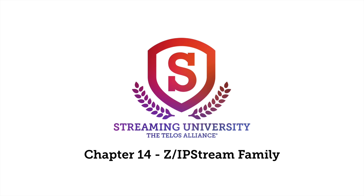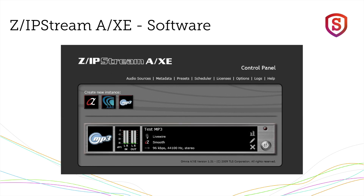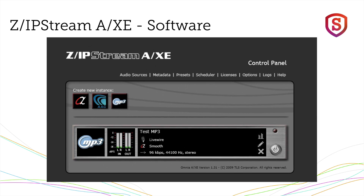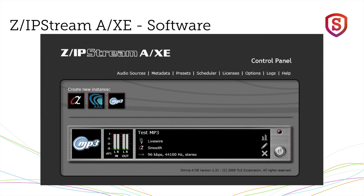Let's take a quick look at the different products in the Zipstream family. This is the Zipstream AXE — software that runs as a service in Windows. It'll run in almost any flavor of Windows, from Windows XP all the way up to Windows 10. You can feed audio to it via Livewire, or via whatever sound card you have in the PC. It just uses the Windows operating system to grab the audio, so anything Windows agrees with, the Zipstream AXE will also grab and encode.